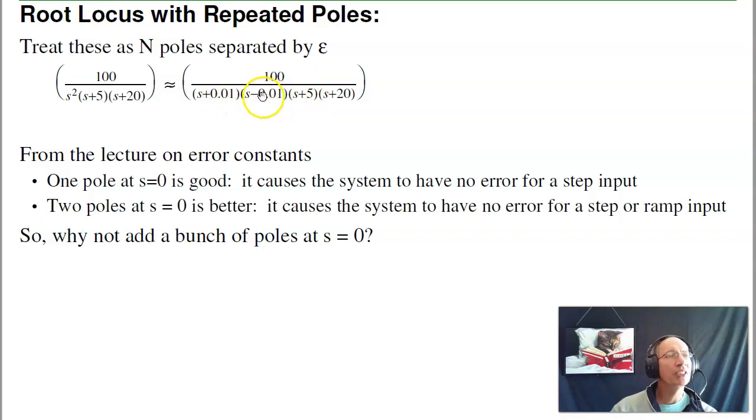What happens is these two poles, in terms of the real axis loci, come together and then split apart. So right away I've got the two poles at s equals 0, split apart and go straight up and down.